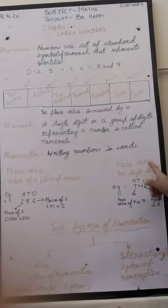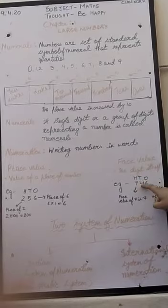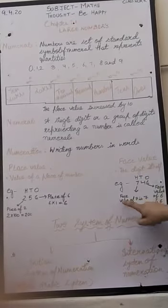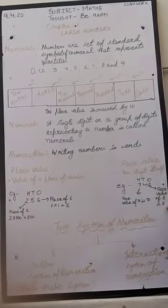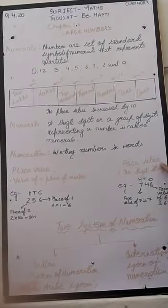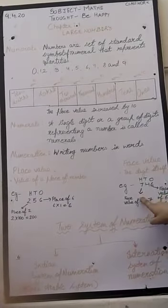Now let's come to the another concept. That is face value. The digit itself. 746. Now the face value of 7 is 7. The face value of 6 is 6.